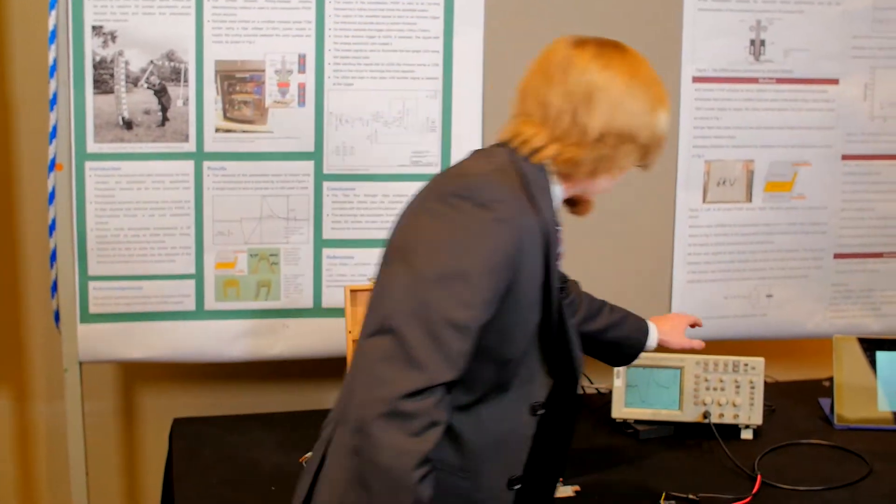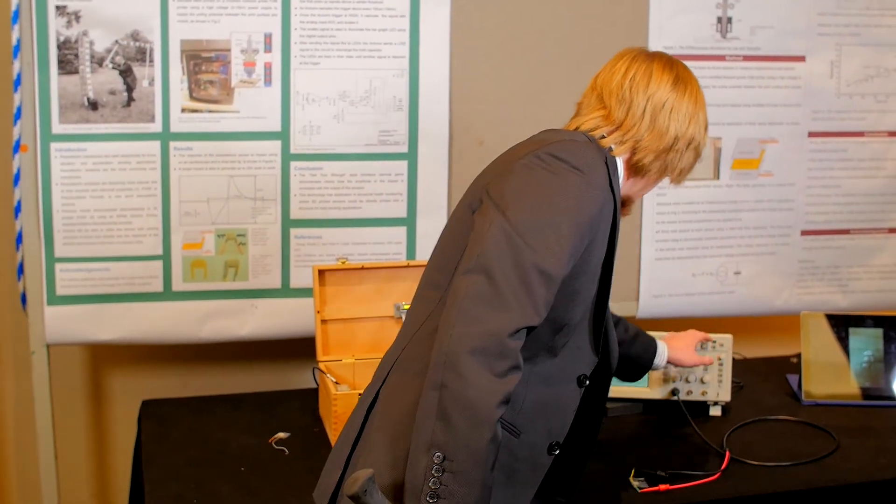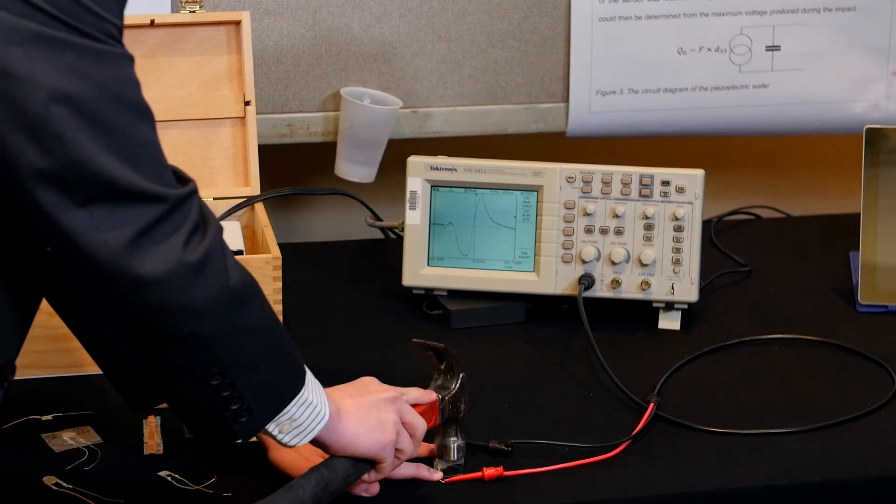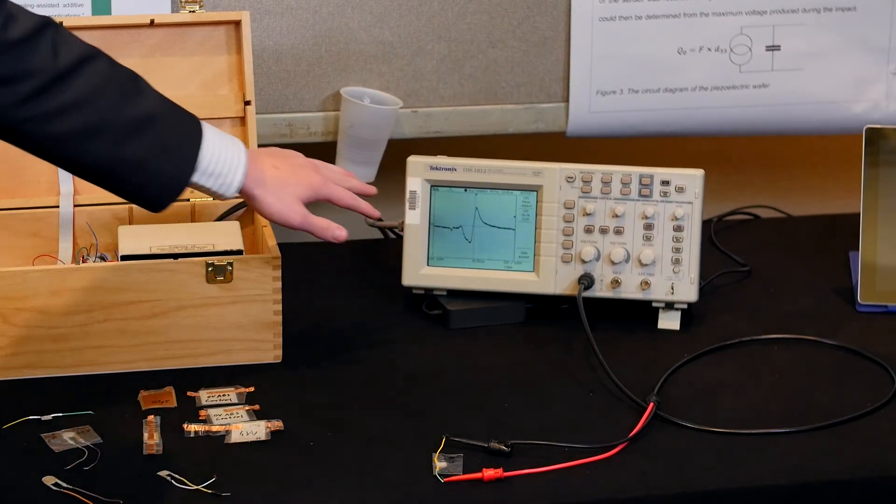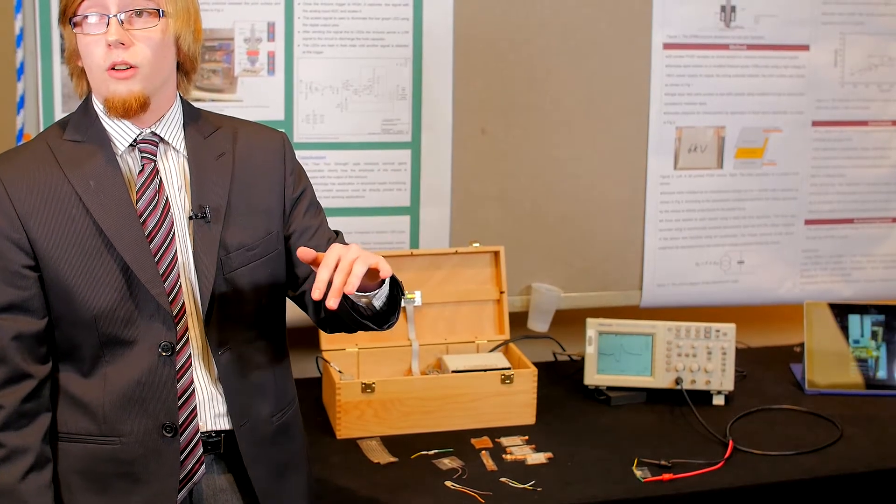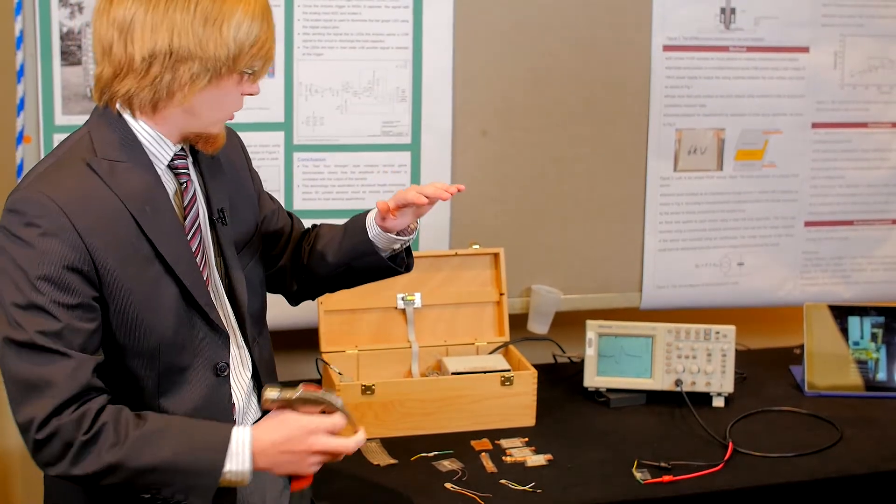So now I will run our oscilloscope. It's ready to capture. And if I tap this with a hammer, we should get a response. And we can look at that response on the oscilloscope and quantify the level of how much voltage was generated. In this case, we see a voltage of about 20 volts peak to peak on the sample.